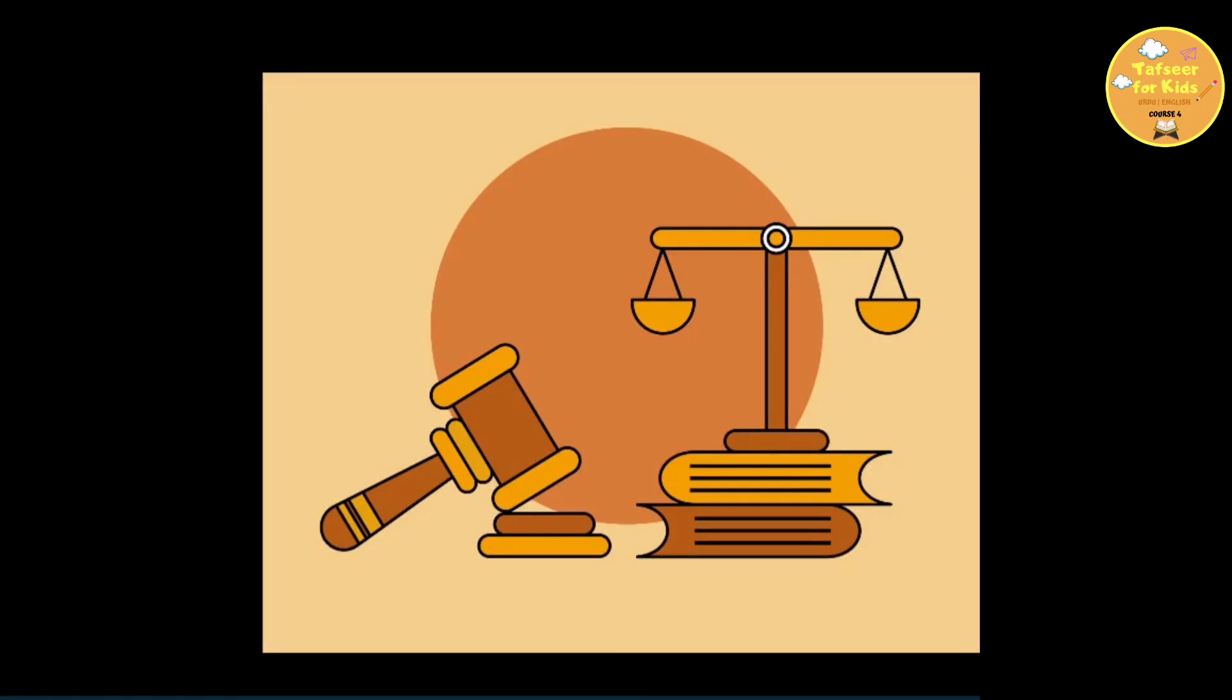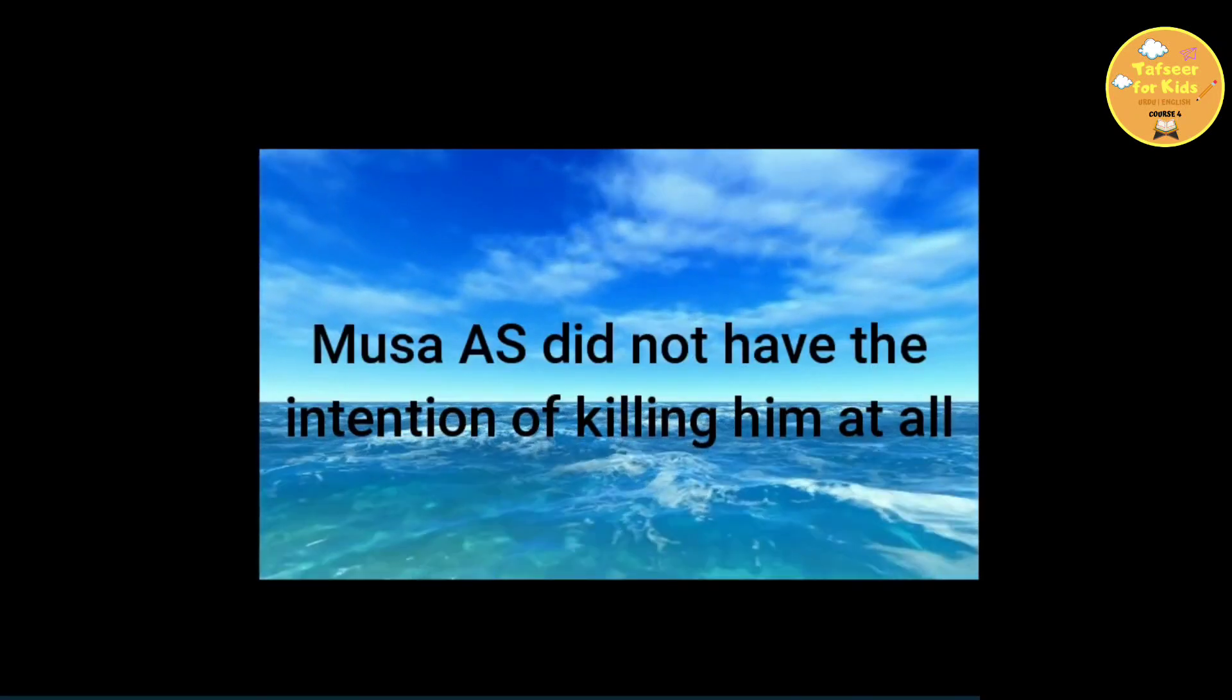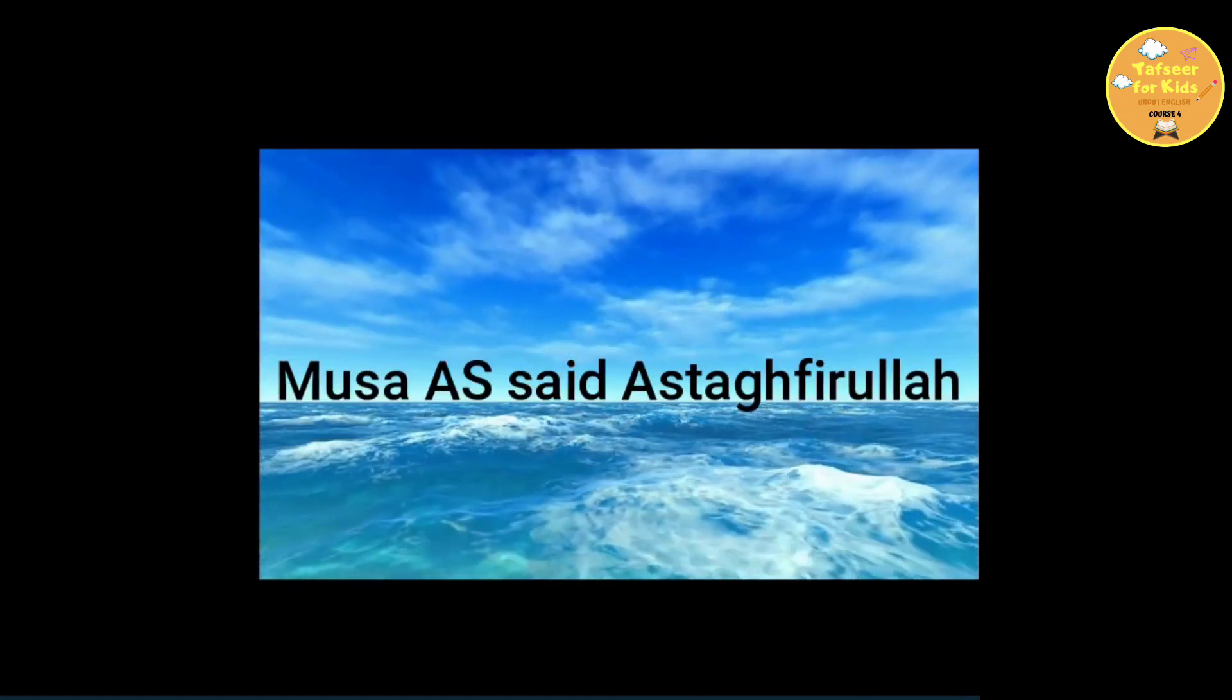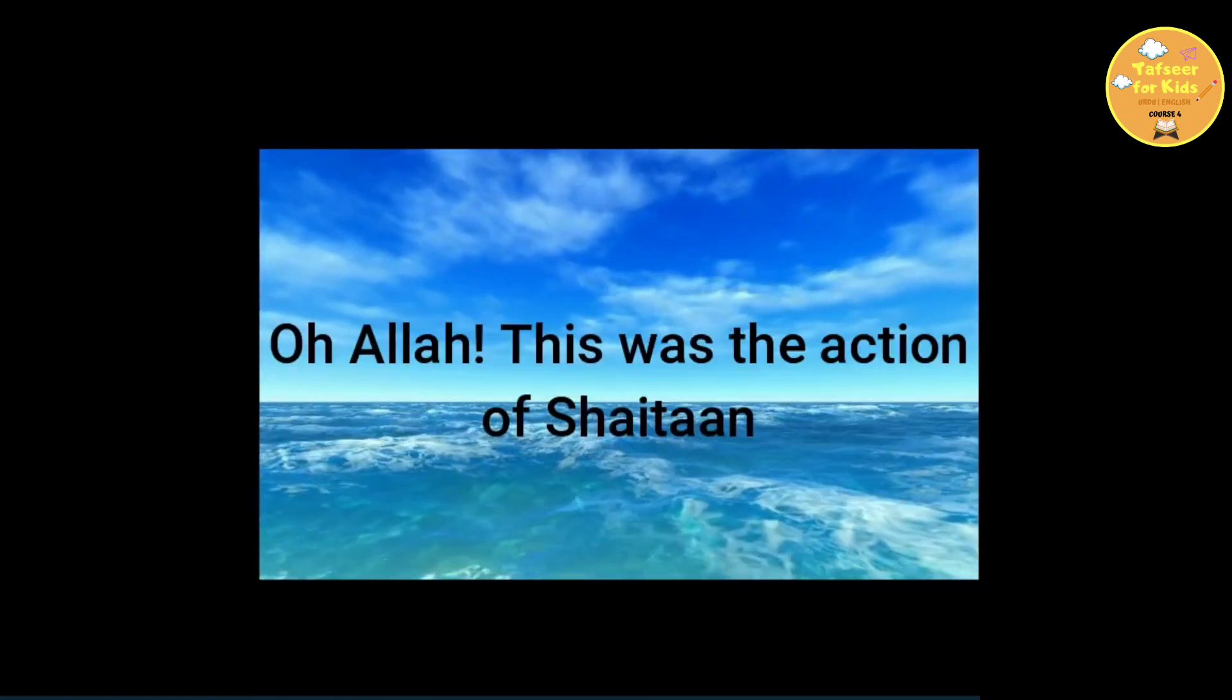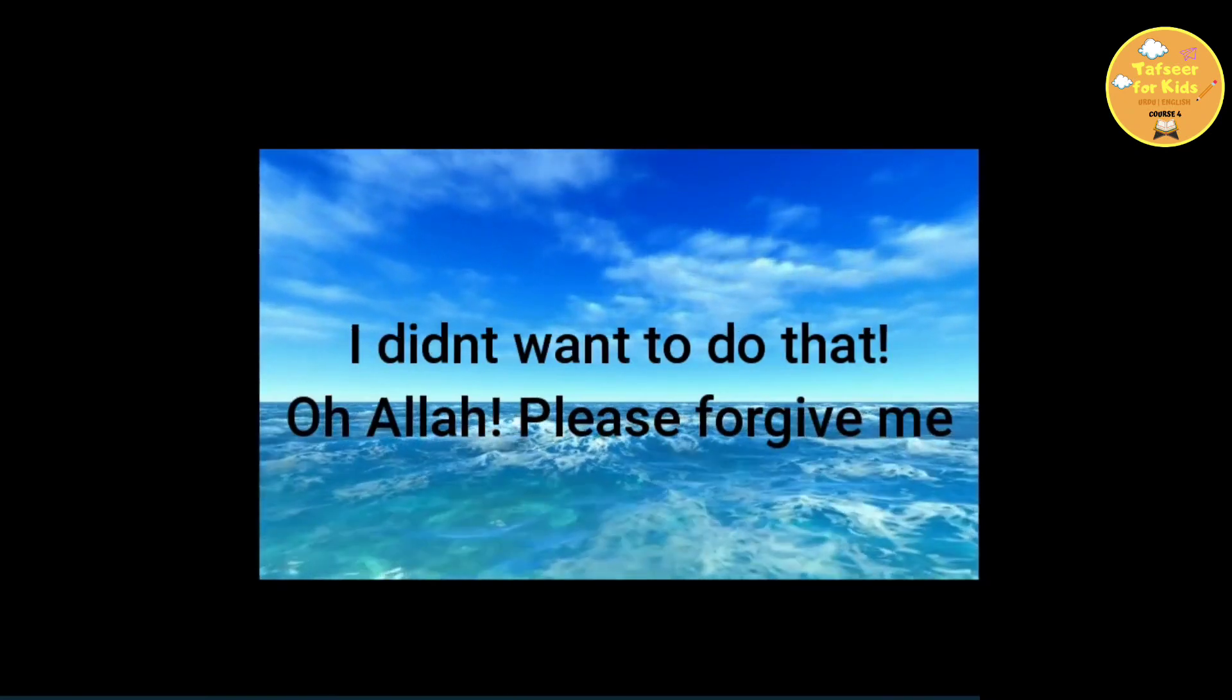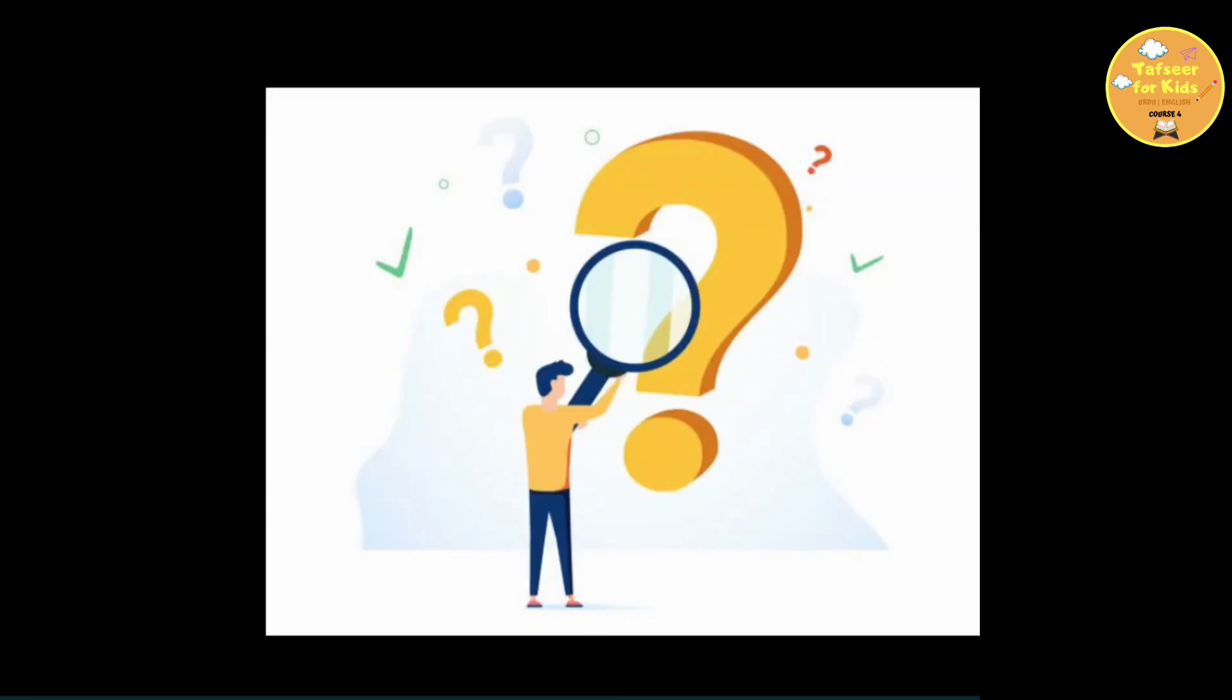And in that fight, unintentionally, he punched that man and the man went down on the floor and he died right there and then. Musa alayhi salam did not have the intention of killing him at all and he was just trying to stop the fight. Musa alayhi salam said, Astaghfirullah. Oh Allah, this was the action of shaitan. I didn't want to do that. Oh Allah, please forgive me. So, Musa alayhi salam ran away.